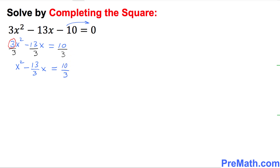Now focus on the coefficient of x, which is this number. Don't worry about the negative sign — I'm only interested in 13 over 3. I'm going to write it down: 13 divided by 3. The next thing is to multiply by 1 over 2, which gives us 13 over 6.